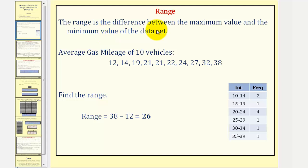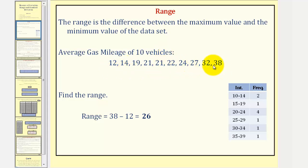The range is the difference between the maximum value and the minimum value of the data set. Here we have a data set that gives us the average gas mileage of 10 vehicles. Notice how the data is ordered from least to greatest, which makes it easier to identify the maximum value and the minimum value. The maximum value is 38 and the minimum value is 12.